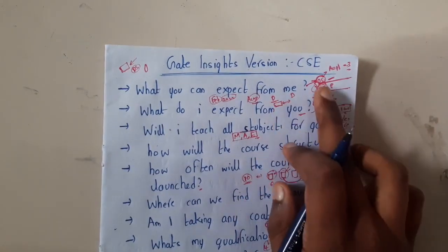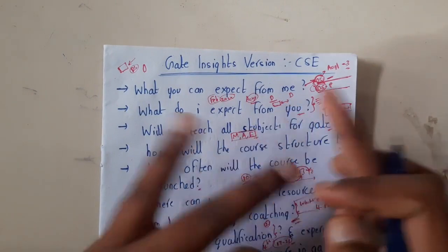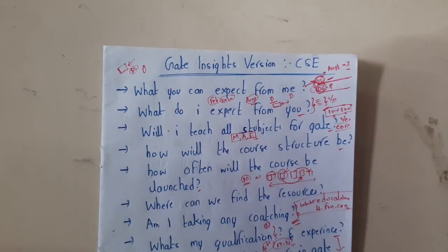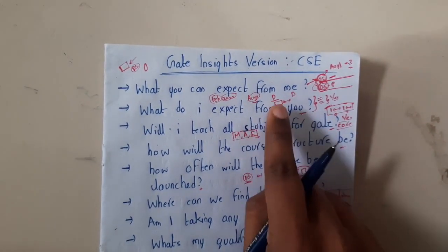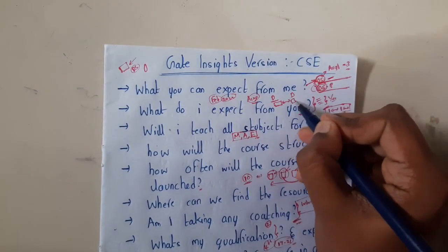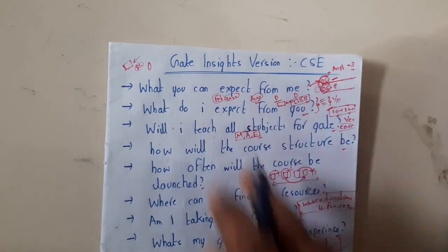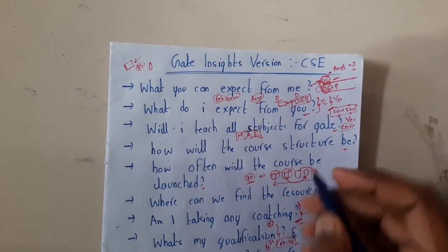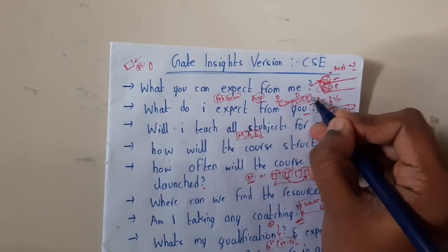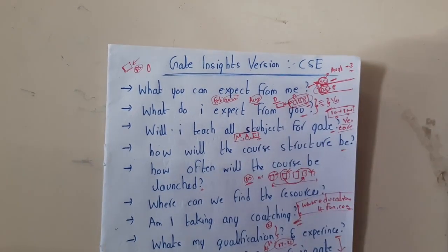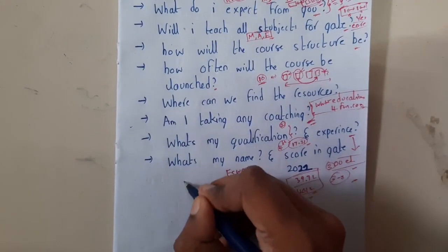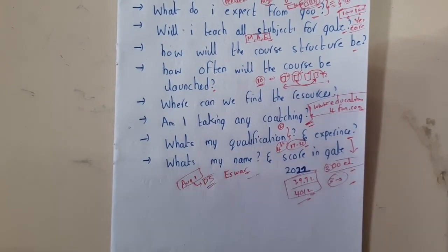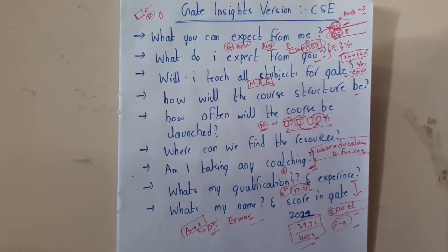So now you have an idea of the course structure: theoretical part first, then previous year papers. Combined, you can complete the subject well. The only thing I expect from you is dedication — work on it every day. If you're a GATE aspirant wanting to crack it and enter a good college or a PSU, you need a really good score, which means dedicating time daily. The next course is live from August 1st, starting with Data Structures.